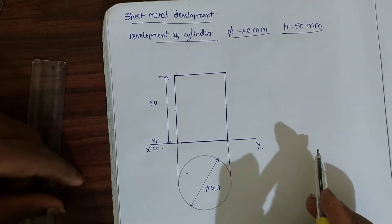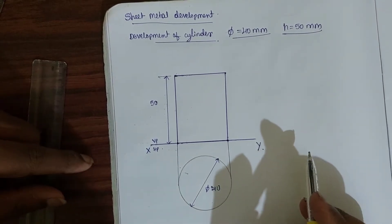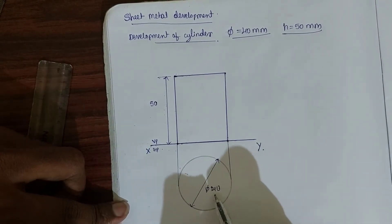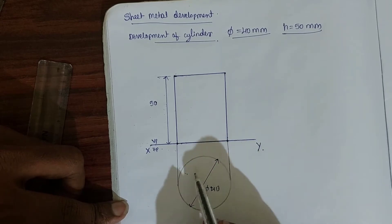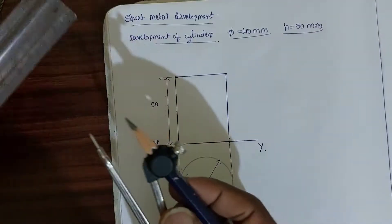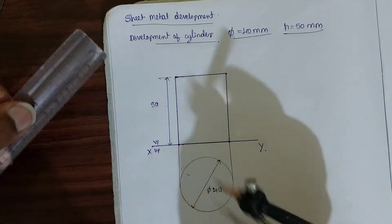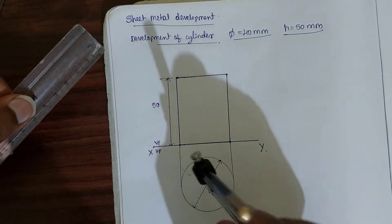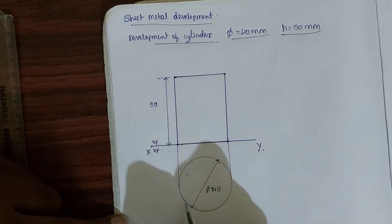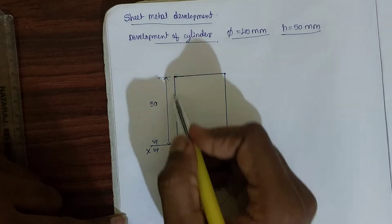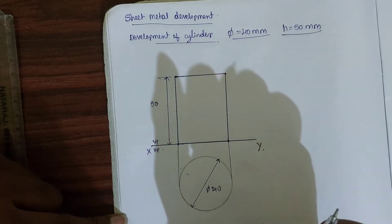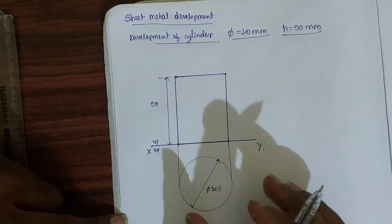This is the top view and front view for the given cylinder dimensions. For the top view, draw a circle of 40mm diameter — take a measure of 20mm using a compass, keep a center point, then draw the circle. Draw projection lines from the tangent of the circle and take a height of 50mm to complete the front view.